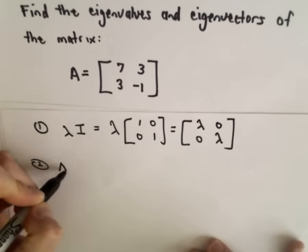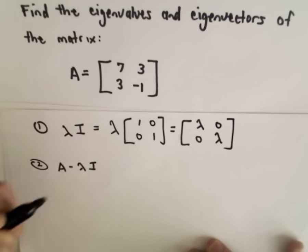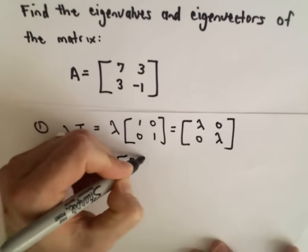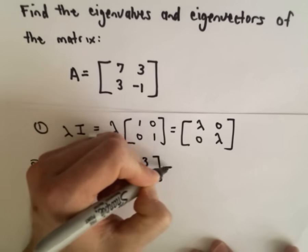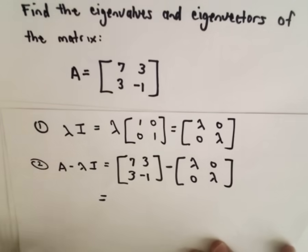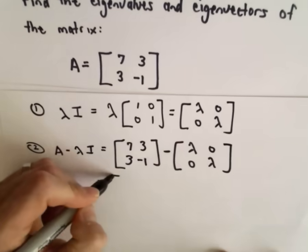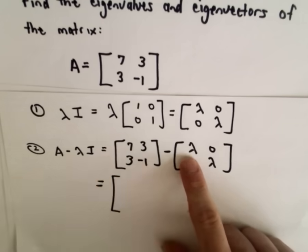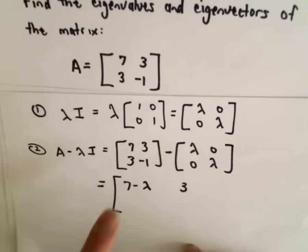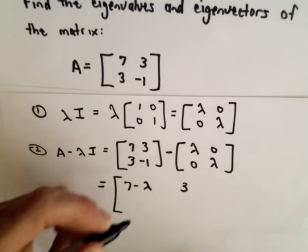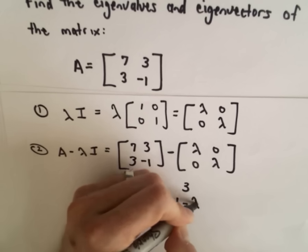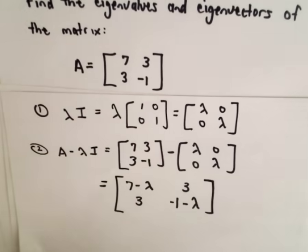Step 2: we take our matrix A and subtract lambda times I. Our matrix A has entries 7, 3, 3, negative 1, and we subtract lambda, 0, 0, lambda. Subtracting respective entries: the top left entry will be 7 minus lambda, then 3 minus 0 which is just 3, then 3 minus 0 which is again just 3, and then negative 1 minus lambda. So those are our four entries.